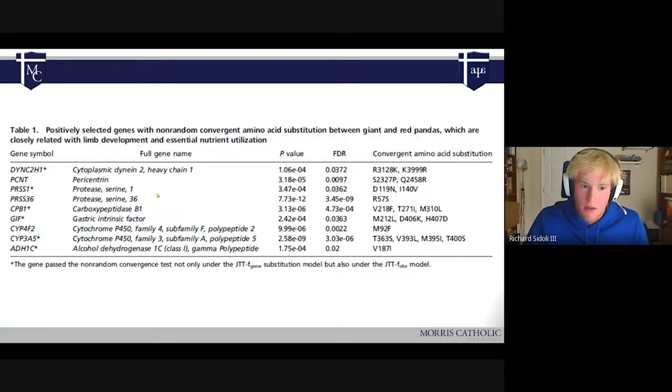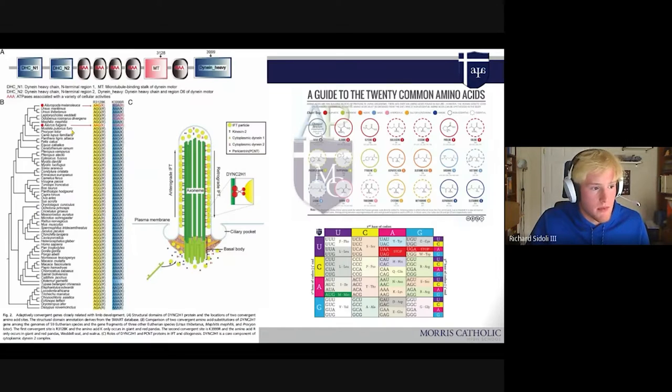A mammal, like a black bear for example, wouldn't have these enzymes to actually extract the amount of lysine and arginine that they need to be used in the pandas genome.